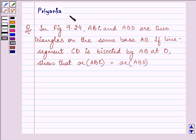Hi and how are you all today? My name is Priyanka and the question says, in figure 9.24, ABC and ABD are two triangles on same base AB. If line segment CD is bisected by AB at O, show that area of ABC is equal to area of ABD.